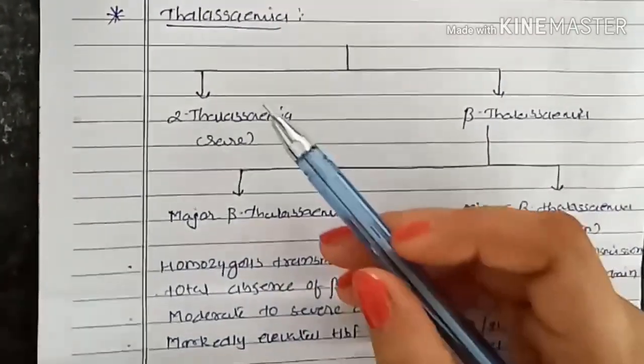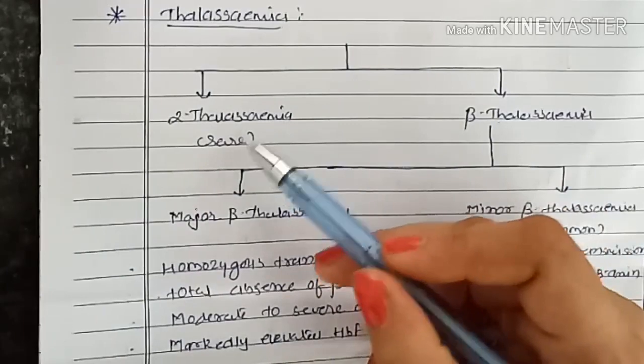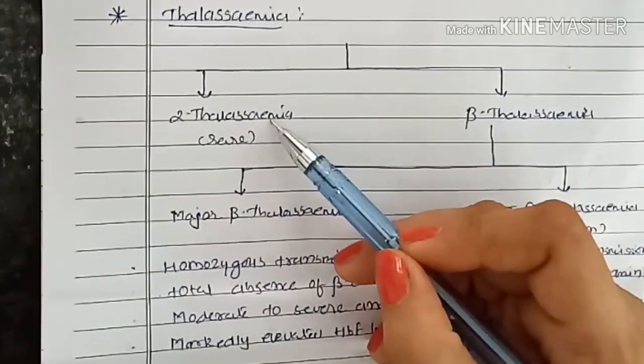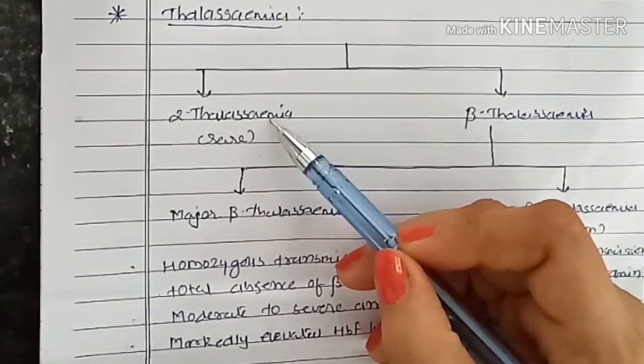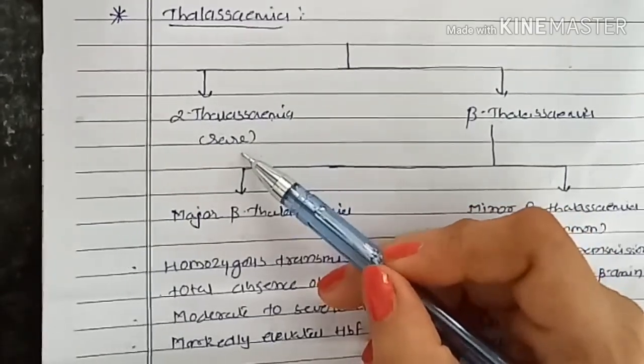Thalassemia. It has two varieties. Alpha thalassemia in which alpha chain of the globin is affected. It is very rare.